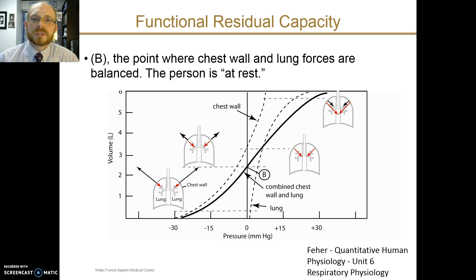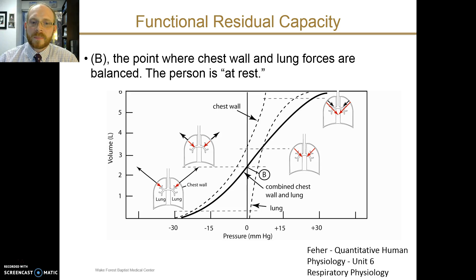Let's talk about functional residual capacity and how we can understand these changes. At FRC, the individual is at rest at the end of expiration, and the diaphragm and other respiratory muscles are not active. The lung volume at FRC is determined mainly by the balance between the recoil outward of the chest wall and the recoil inward of the lungs themselves.